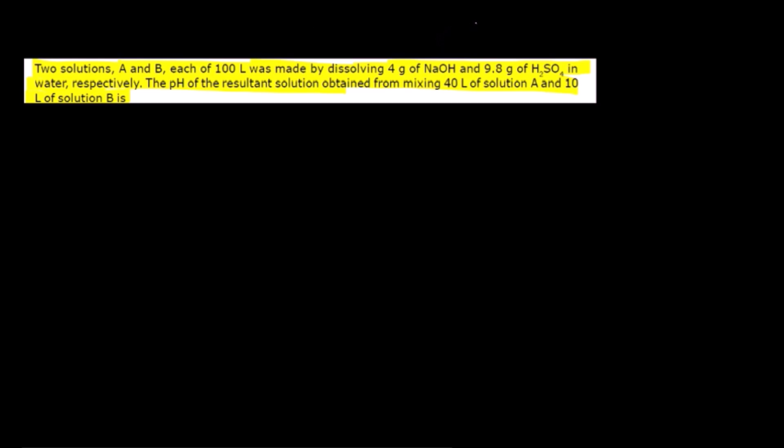pH calculation question: Solution A has 4 g NaOH in 100 L; Solution B has 9.8 g H₂SO₄ in 100 L. 40 L of solution A is mixed with 10 L of solution B. Find the pH of the resulting 50 L solution. First, find initial normalities: Normality of NaOH = (4/40)/100 = 10⁻³ N. Normality of H₂SO₄ = (9.8/98)×2/100 = 2×10⁻³ N.